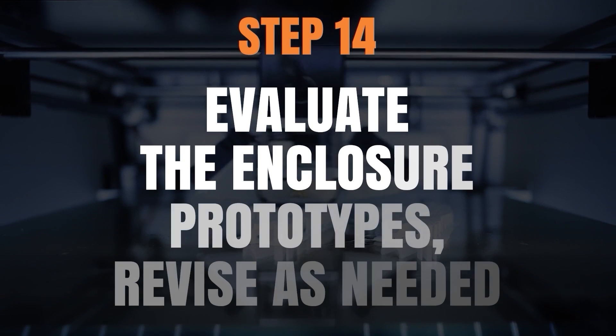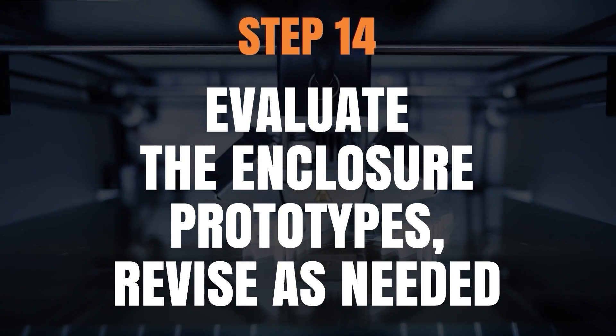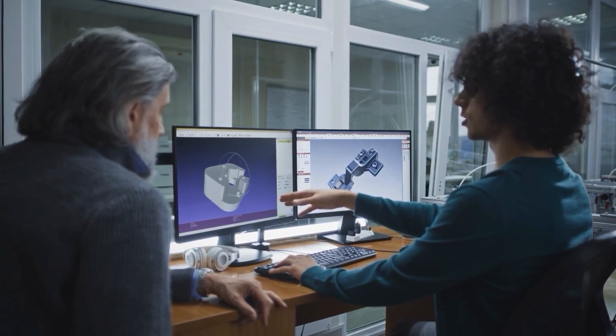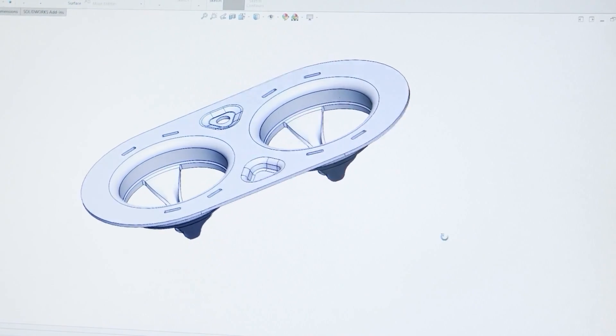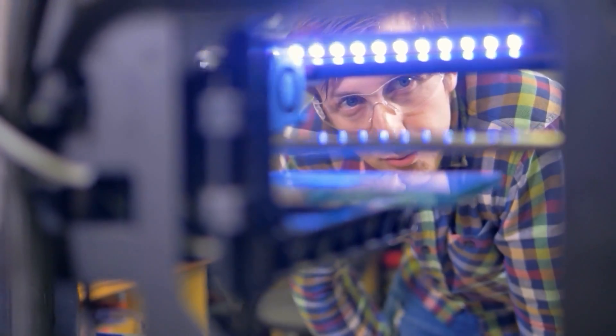Step number fourteen: evaluate the enclosure prototype and modify the 3D model. Generally it will take several prototype iterations to get the enclosure design just right. Although 3D computer models allow you to visualize everything, nothing compares to holding a real prototype in your hand. There will almost certainly be both functional and cosmetic changes that you'll want to make once you hold your first physical prototype.